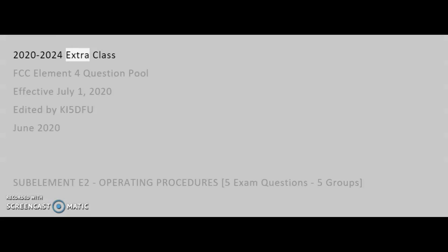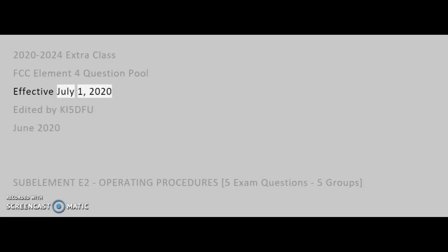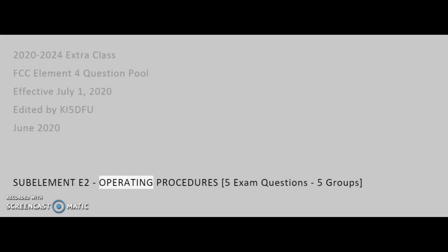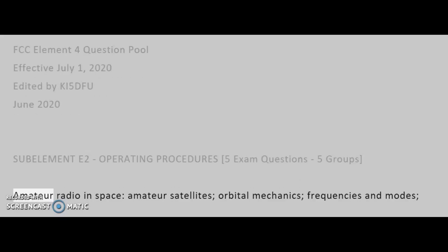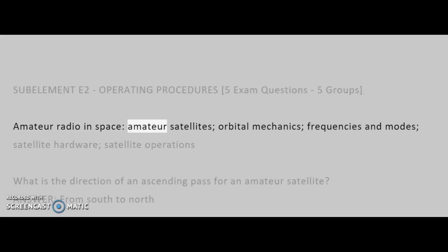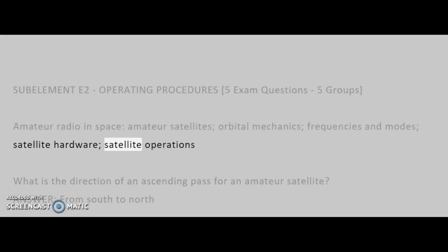2020-2024 Extra Class FCC Element 4 Question Pool, effective July 1, 2020. Edited by KI5DFU, June 2020. SubElement E2: Operating Procedures — 5 exam questions, 5 groups. Topics include: Amateur Radio in Space, Amateur Satellites, Orbital Mechanics, Frequencies and Modes, Satellite Hardware, and Satellite Operations.